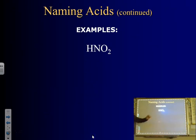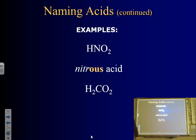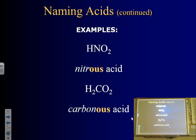So now instead of nitrate we're looking at nitrite, which gives us nitrous acid. And for carbonate — CO3 — if we have one less oxygen that's carbonite, and the acid name would be carbonous or carbonous.